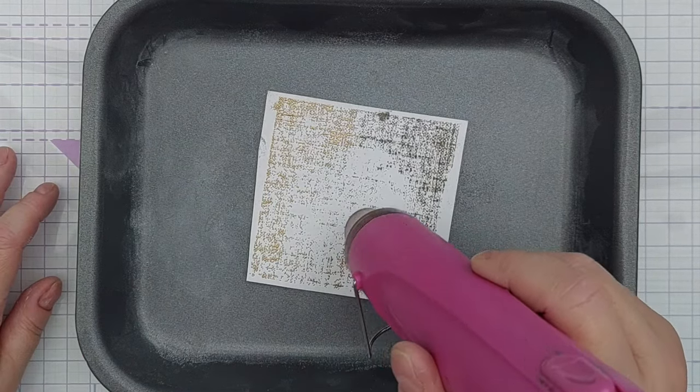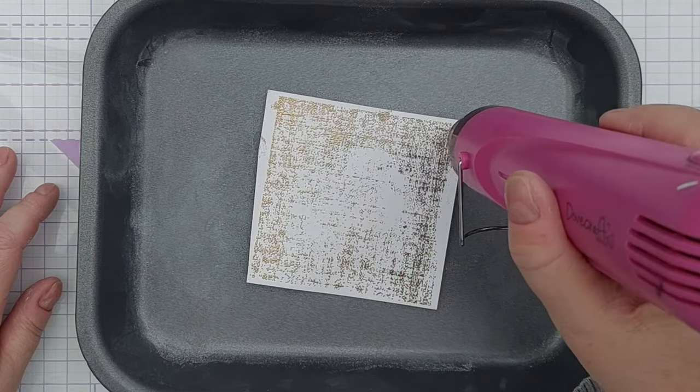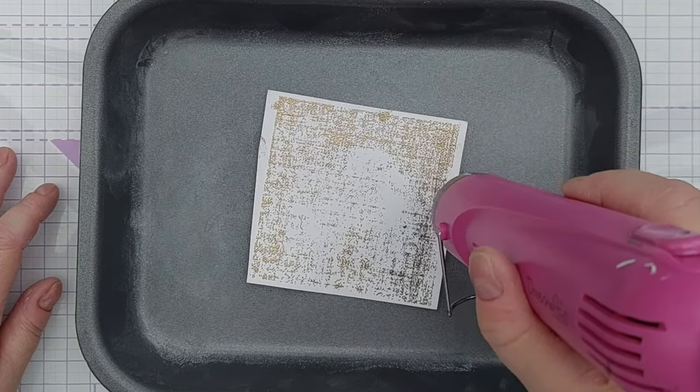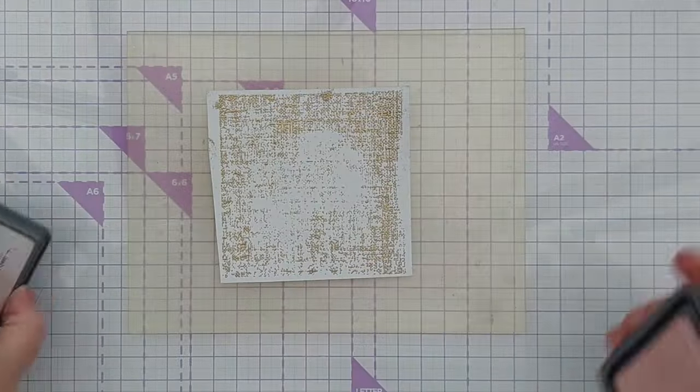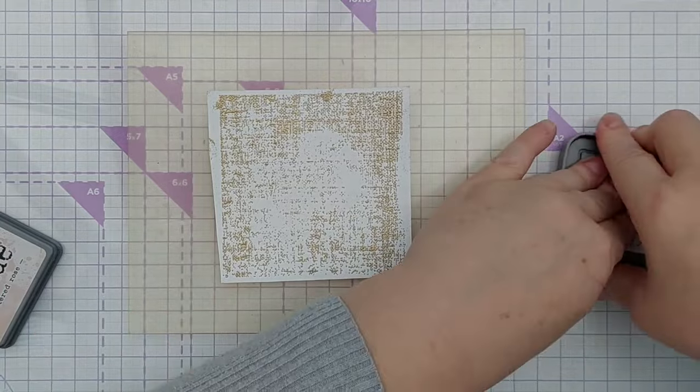Once I'd stamped my card, I dipped it in gold embossing powder and then heated it with my heat tool to melt the powder, and once that was all set and cooled, I popped it on my grip mat and did some smushing.